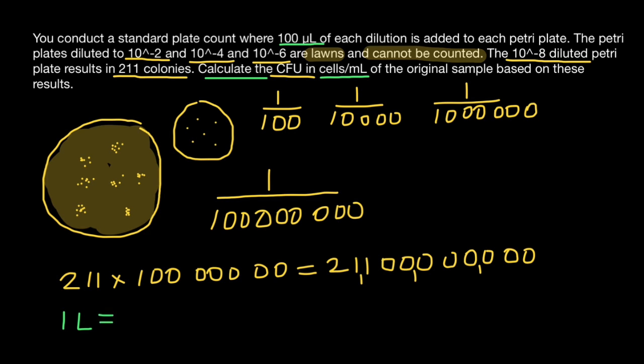One liter equals 1000 milliliters and also equals one million microliters. One milliliter is one thousandth of a liter. And one microliter is one millionth of a liter and one thousandth of a milliliter. That means that 100 microliters equals 0.1 milliliters.